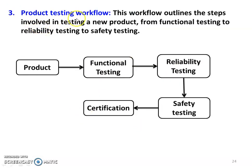The next is the product testing workflow. This workflow outlines the steps involved in testing a new product, from functional testing to reliability testing to safety testing. Functional testing checks whether the product's intended function is effectively carried out. Reliability testing checks whether the product is reliable using established procedures. Safety testing examines the product with respect to safety. Once all tests are passed, the product is certified as safe to use.